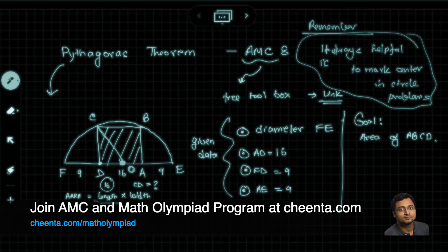So let's join OC. Now see, O is the center of the diameter. This is 9 and this is 9. So of course, these two pieces will also be equal because OF and OE are equal. FD is 9, AE is 9. So OD and OA must be equal as well. So that means OA and OD are each 8.